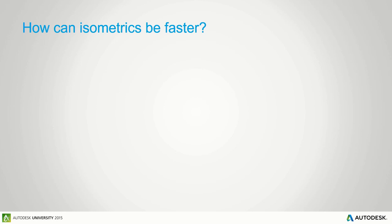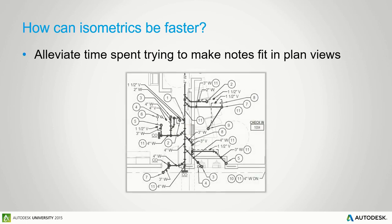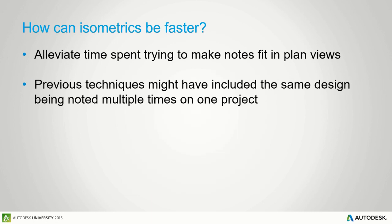We find isometrics are actually a lot faster than trying to cram plan notes to convey all the design intent we need for code review and contractors. We can alleviate a lot of the time spent on repetitive notes. For example, if you have a four-inch sanitary going up and down through multiple floors, you'd have to note that same thing on every floor. If you have it in an isometric view, you see that information and don't have to convey it with a note each time.